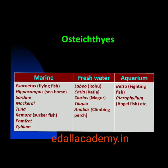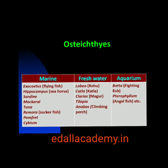Examples of Osteichthyes — Marine: Exocoetus, the flying fish; Hippocampus, the sea horse. Freshwater: Labeo, Rohu; Catla; Clarias, Magur. Aquarium fish: Betta, the fighting fish; Pterophyllum, the angelfish.